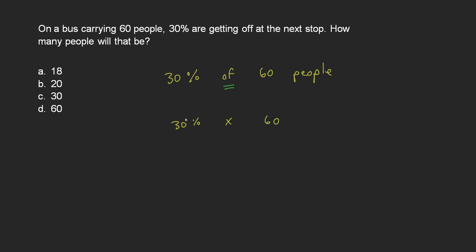Now if you have a calculator that allows you to type in percentages, you could literally just type in 30 and then a percent sign, multiply that by 60, and you get your answer. The answer is going to be A, 18.